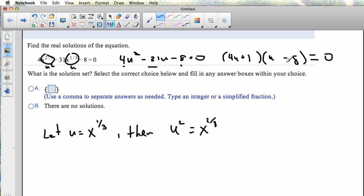So for this to work, the solutions of this equation will be wherever 4u plus 1 is 0 or wherever u minus 8 is 0. And so this thing happens when u is negative 1 fourth. And this guy happens when u is 8.